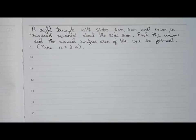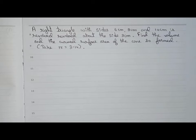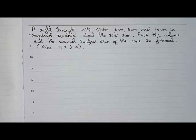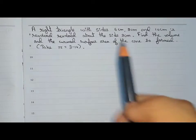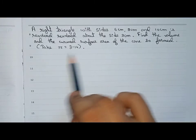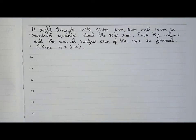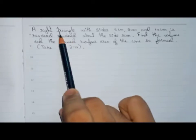Hello guys, welcome to this video. In this video, our question is: a right triangle with sides 6 centimeter, 8 centimeter, and 10 centimeter is revolved about the side 8 centimeter. Find the volume and the curved surface area of the cone so formed. We need to take the value of pi as 3.14.